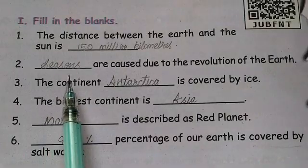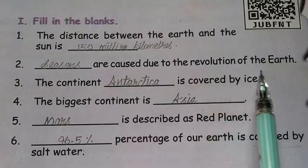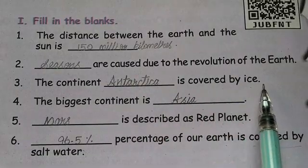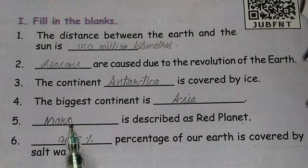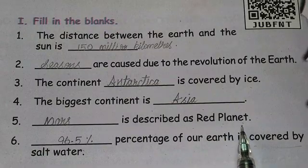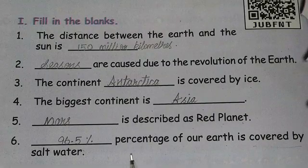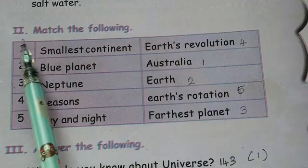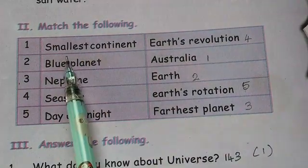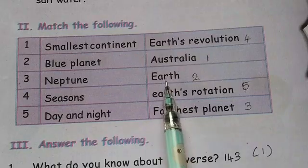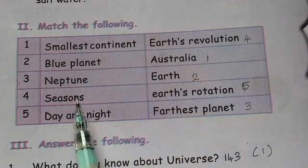Second: seasons are caused due to the revolution of the Earth. The continent covered by ice is Antarctica. The biggest continent is Asia. Mars is described as the red planet. 96.5 percentage of our ocean is covered by salt water. Second section, match the following: smallest continent - Australia; blue planet - Earth; farthest planet - Neptune; seasons - Earth's revolution; day and night - Earth's rotation.